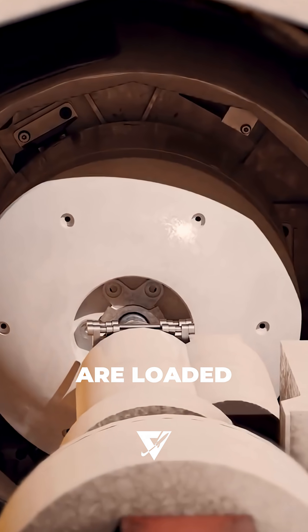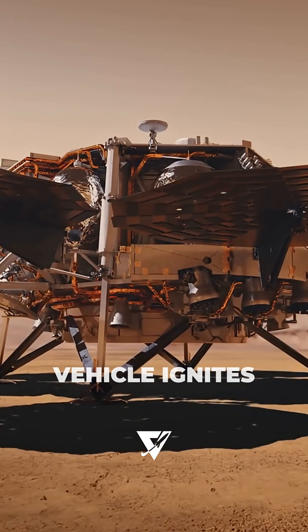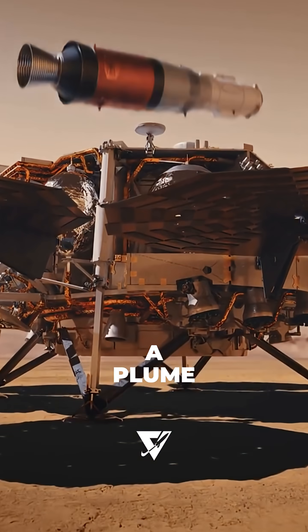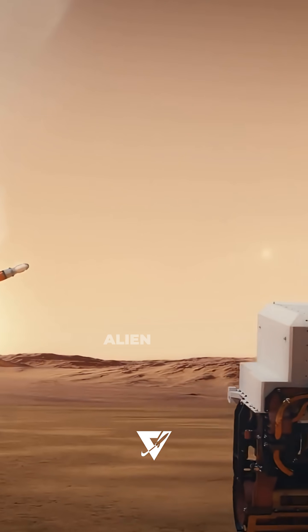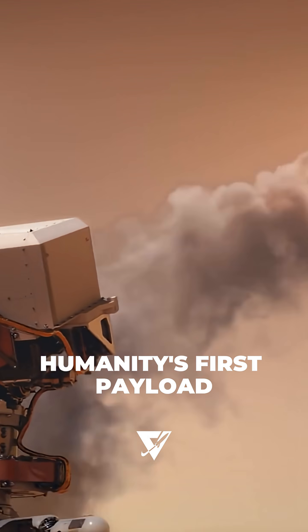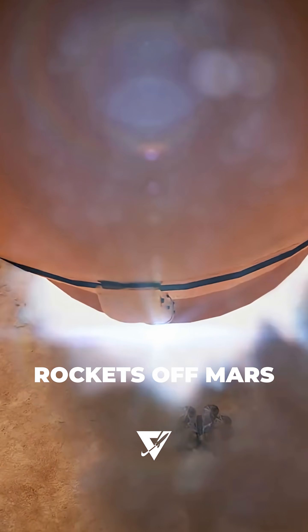Once the tubes are loaded, the Mars Ascent Vehicle ignites. A plume of fire in a thin alien sky. And humanity's first payload rockets off Mars.